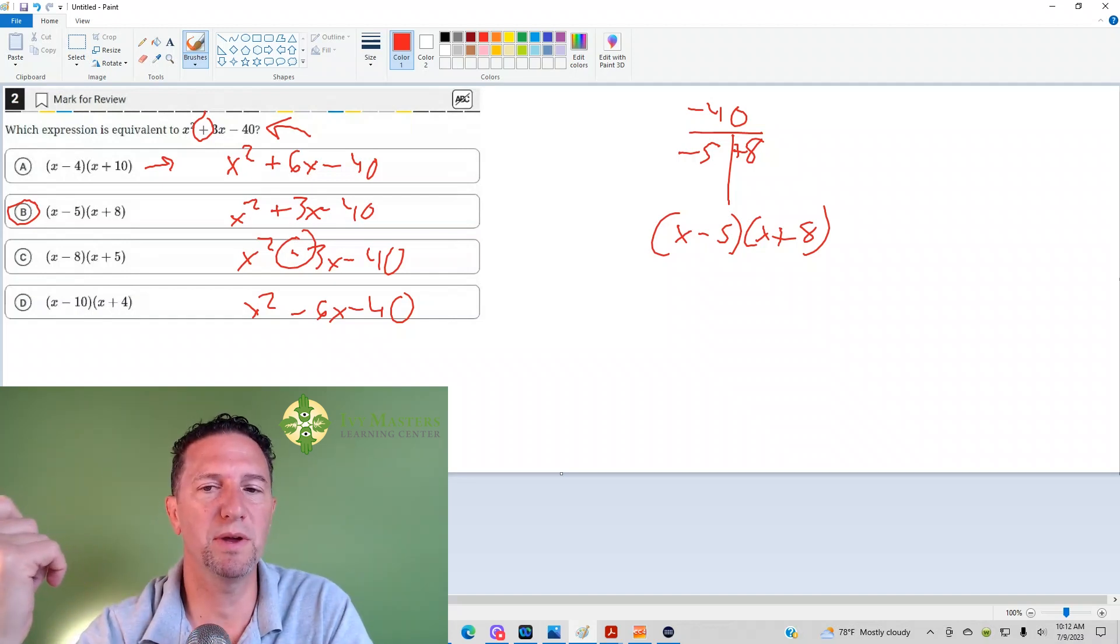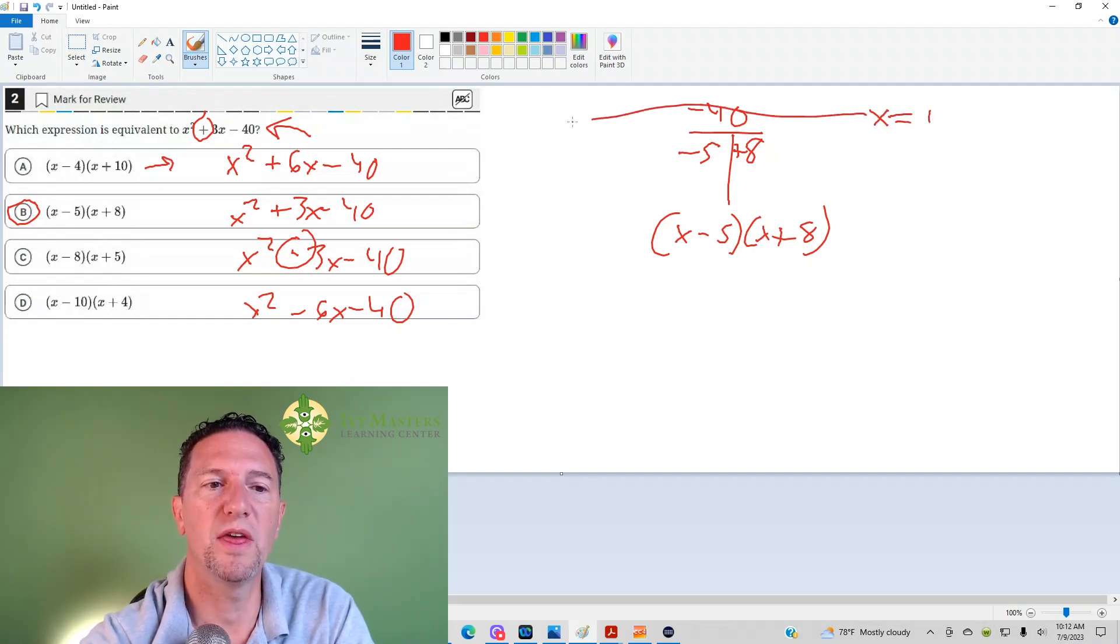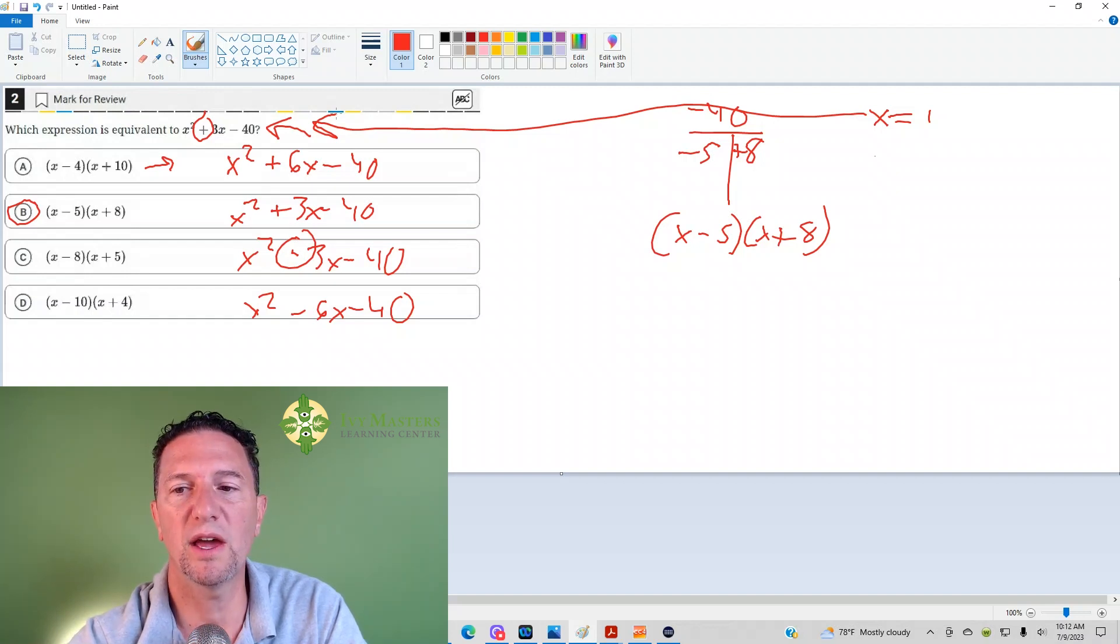Another way you could do it is you could pick a number. And this you could do whenever you have variables in the answer choices. If you're looking at a question and you're like, I don't know how to do it. So if I make my x equal to 1, then I could plug it into this original equation.